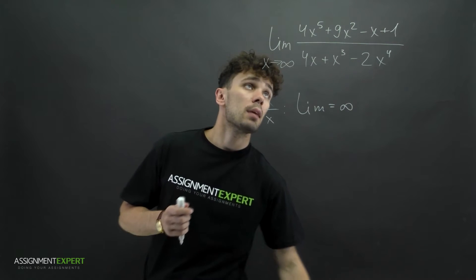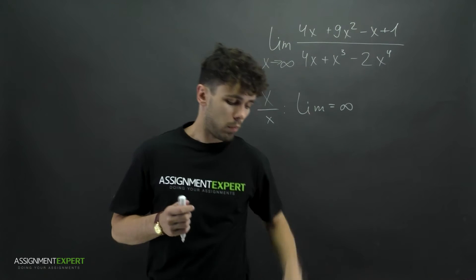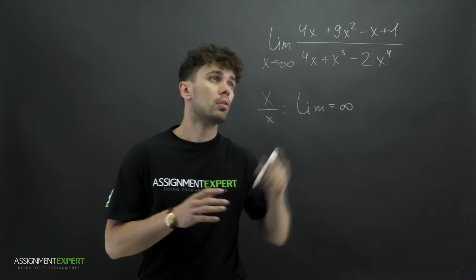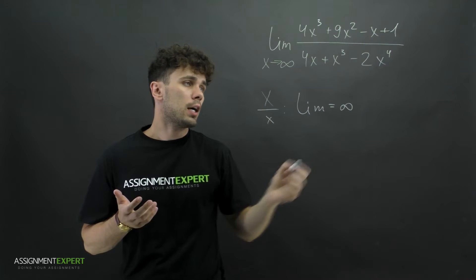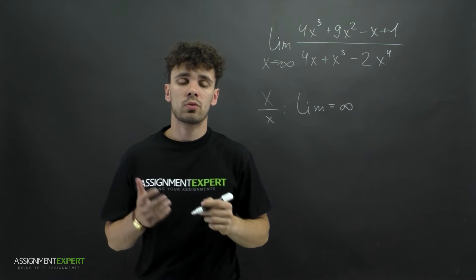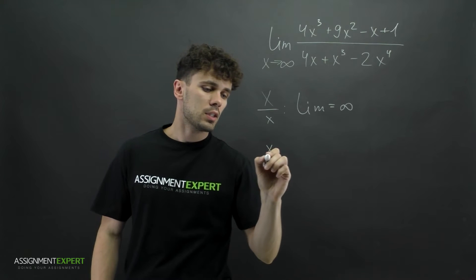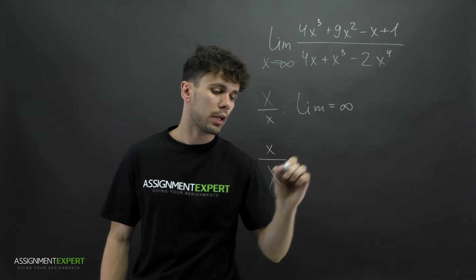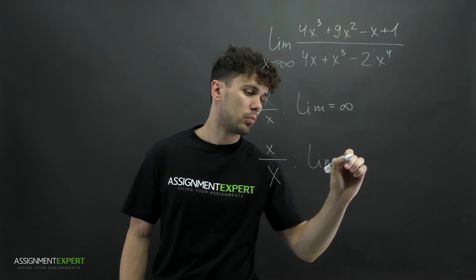Now let's substitute x raised to the fifth power with x cubed. Then the highest power is over here: negative 2x raised to the fourth power. In this case, when the highest power of x is below the line, our limit gives us zero.